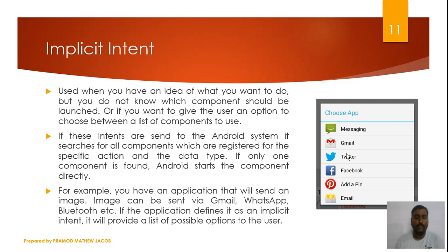For example, if we want to send an image, we can send it via Gmail, Twitter, or Facebook. The privilege is given to the user to choose the launching application. This is the Implicit Intent.